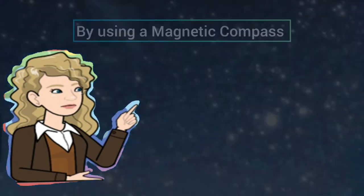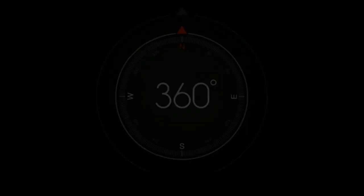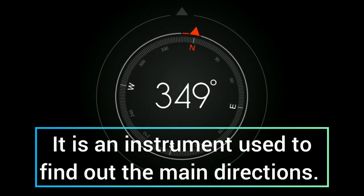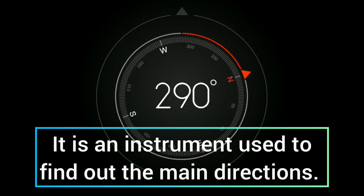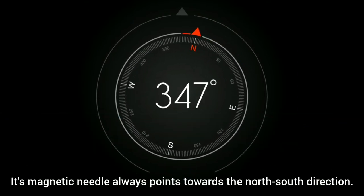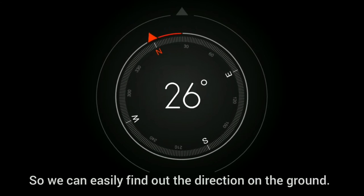I'm sure you must have seen a magnetic compass. It is an instrument used to find out the main directions. Its magnetic needle always points towards the north-south direction, so we can easily find out the direction on the ground.